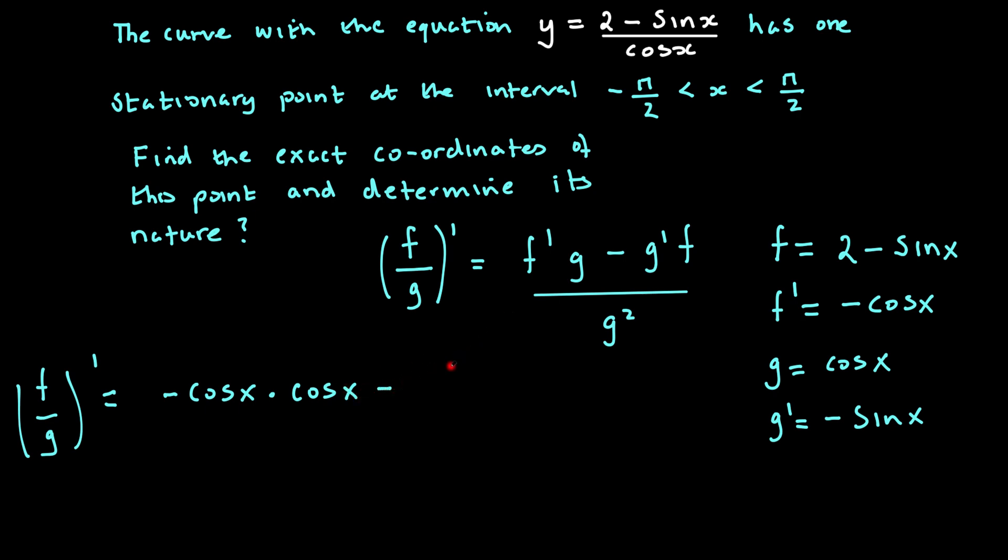And that would be minus g', which is -sin x, multiplied with f which is (2 - sin x). And that's all over g squared which is cos²x.